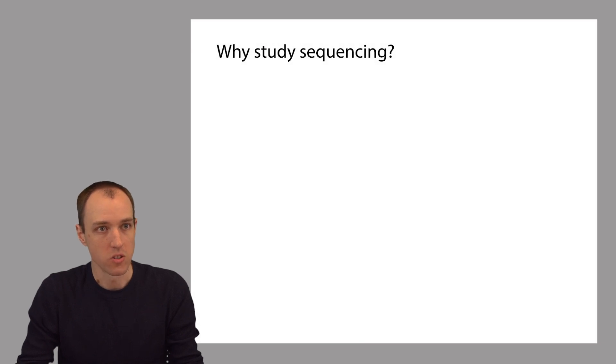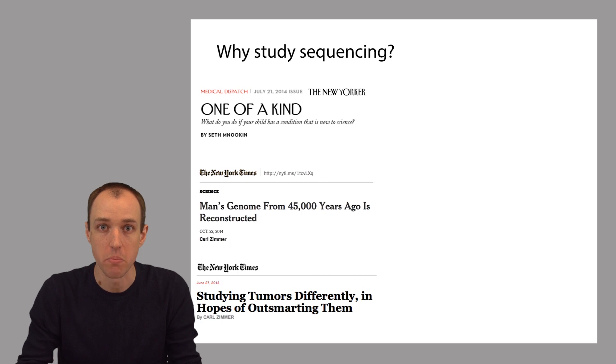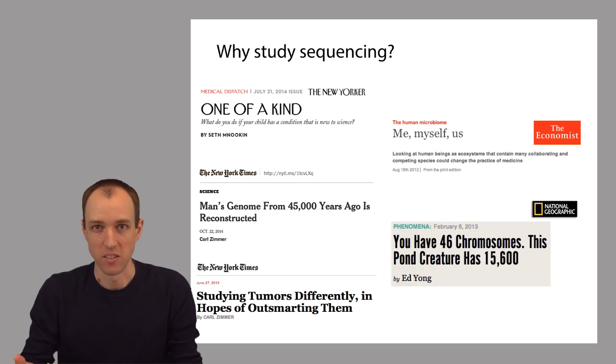For example, scientists are using sequencing to study rare genetic diseases in children, to sequence the genomes of ancient humans to learn more about human origins, evolution, and patterns of migration. They're using it to study tumors of people who have cancer to try to better figure out how to treat that patient's cancer. They're using it to study the vast number of microbes and bacteria that live inside our bodies, especially in our guts, and help us digest food. Or to simply study the basic ways in which genomes work—to answer basic questions like what does all the DNA in the genome do? How does the genome work?